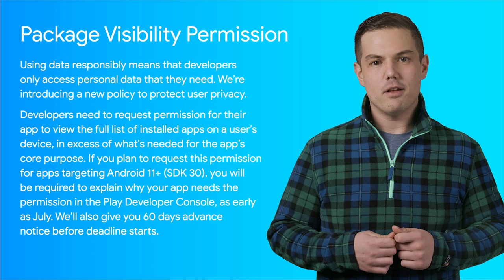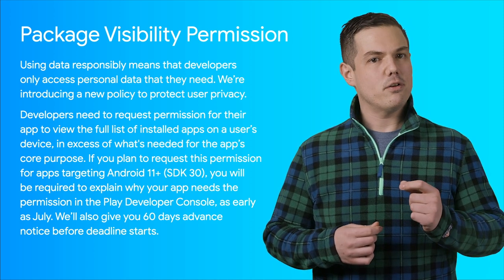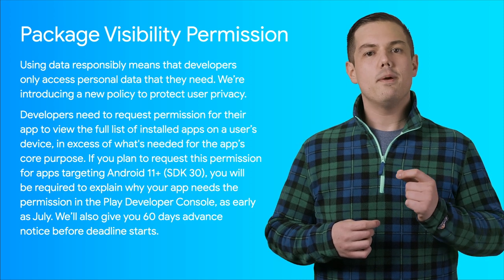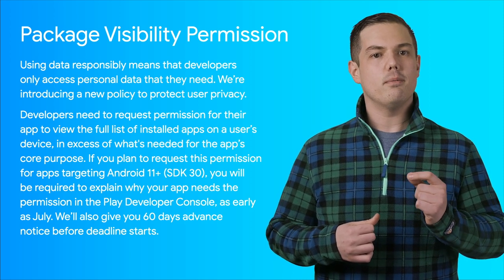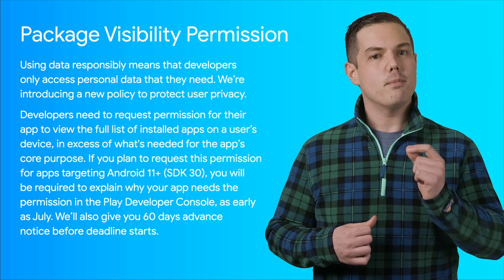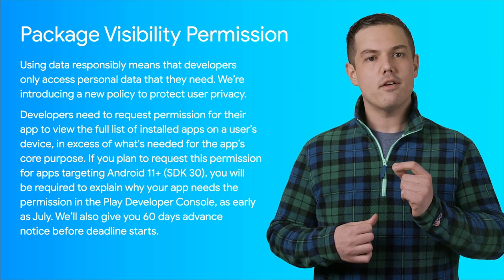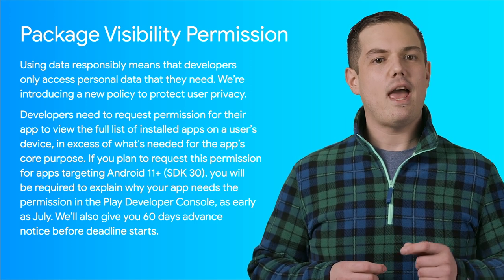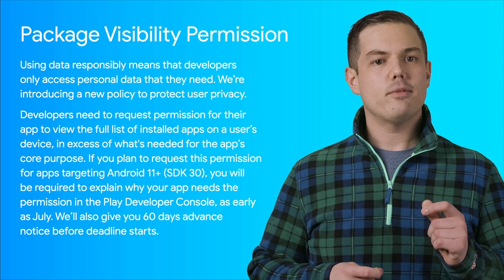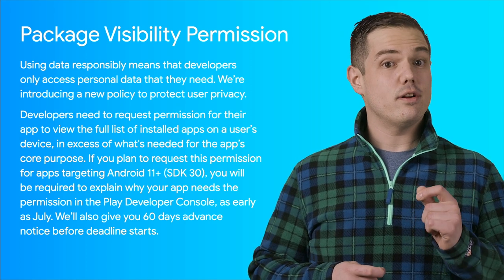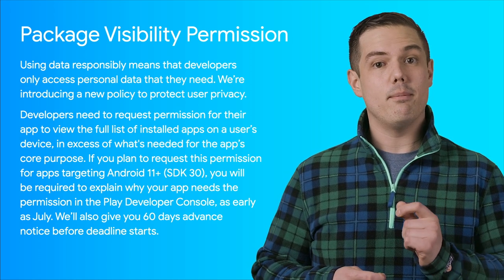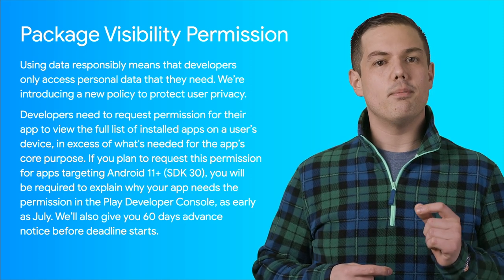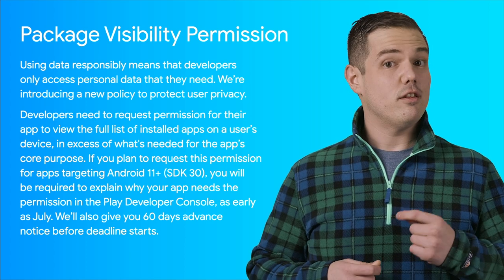Using data responsibly means that developers only access personal data that they need. Later this year, we'll be introducing new policies where developers will be able to request permission and be approved for their app to view what other apps are installed on a user's devices. If you feel you qualify and plan to request this permission for apps on devices targeting Android 11, SDK 30 or above, you will be required to explain why your app needs permission in the Play Developer Console as early as July.